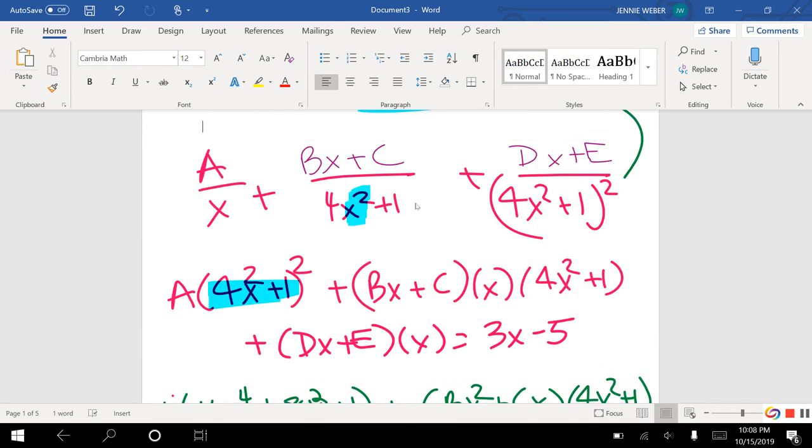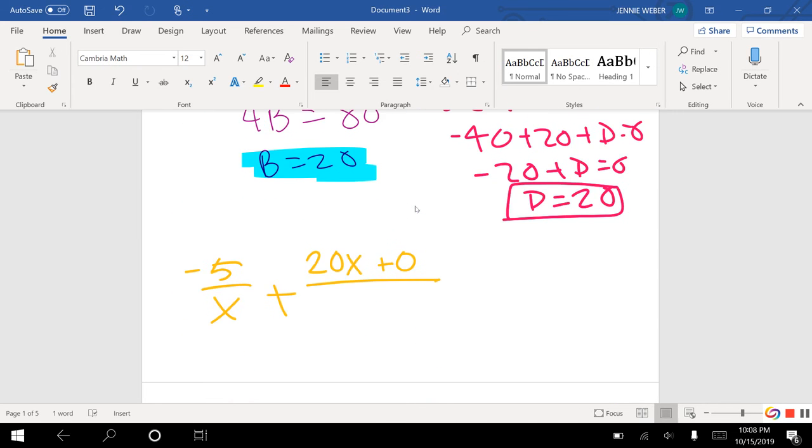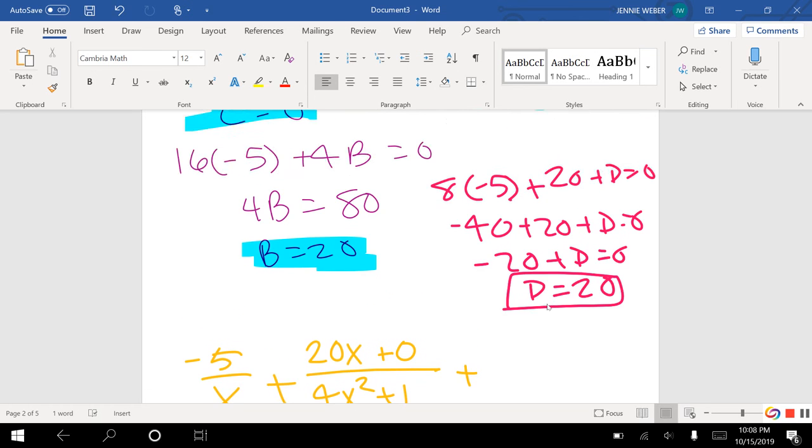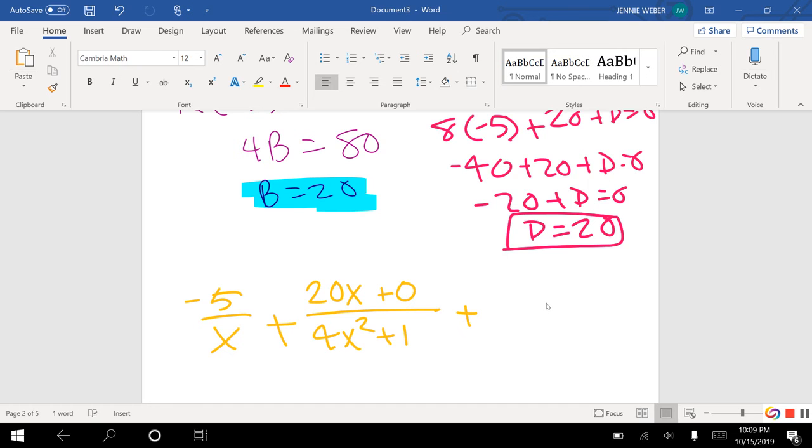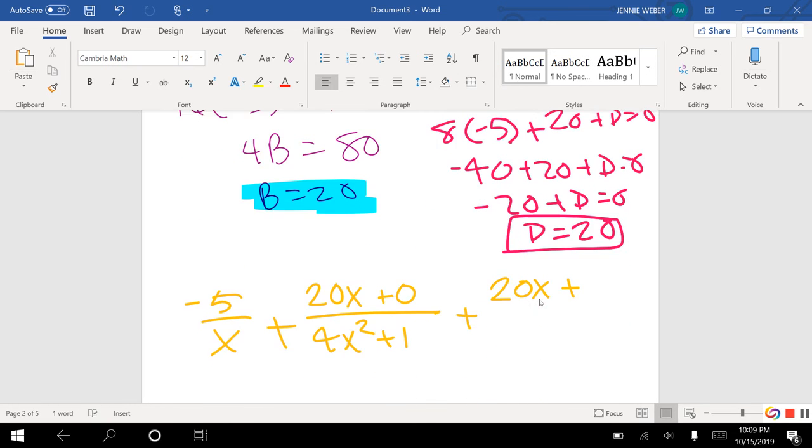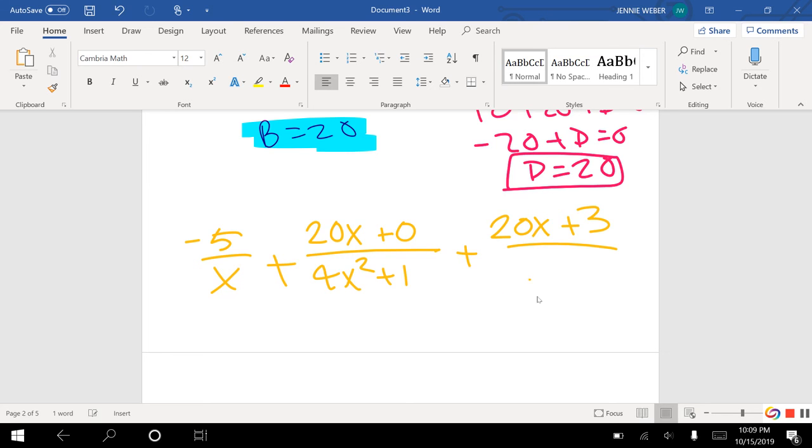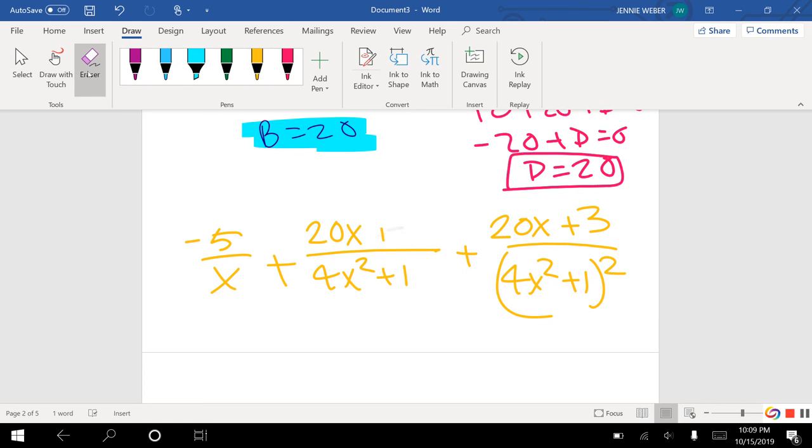And this was over, I set this over my 4x plus 1, 4x squared plus 1. And then here, I had, so this was Bx plus C, so then Dx plus E, and E was 3, all over 4x squared plus 1 squared. And obviously, I don't need the plus 0 there.